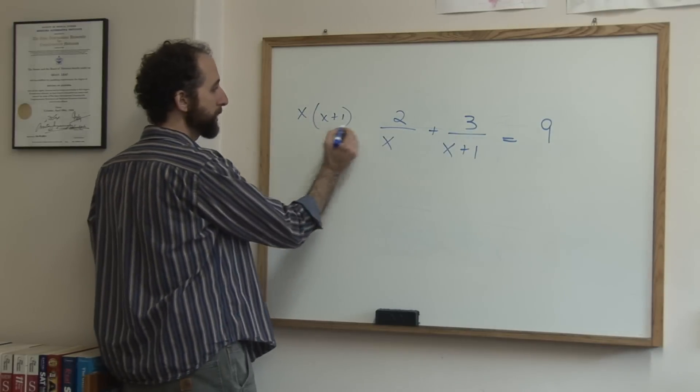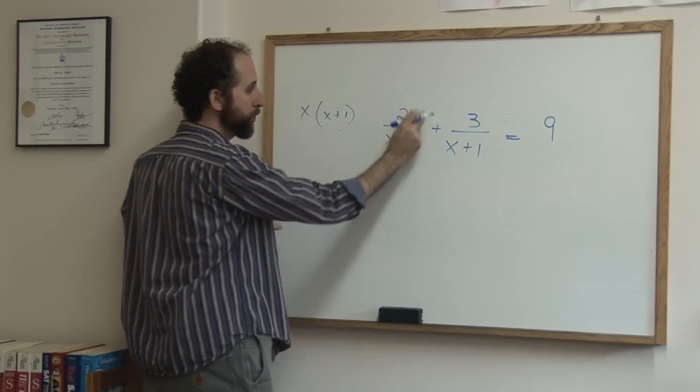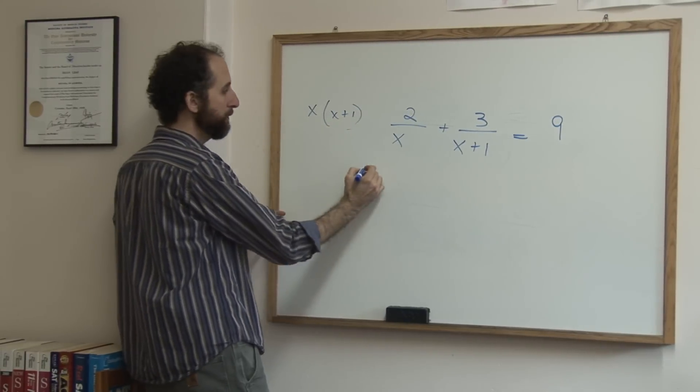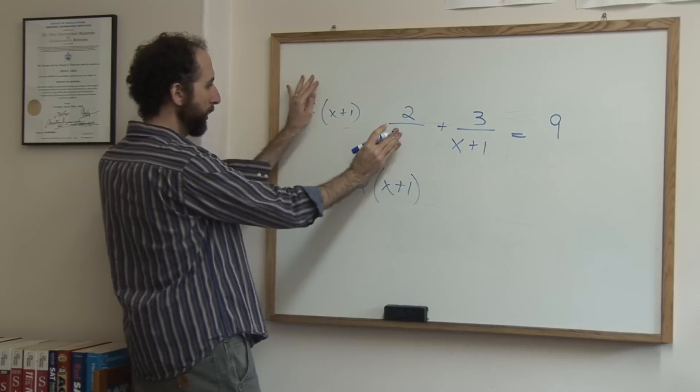So I'm going to multiply this by each of these. When I multiply this by the first term, the x's cancel out, leaving me just x plus 1. So x and x will cancel, leaving me 2 times x plus 1.